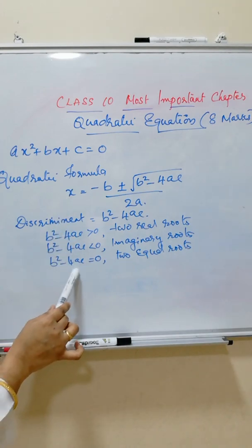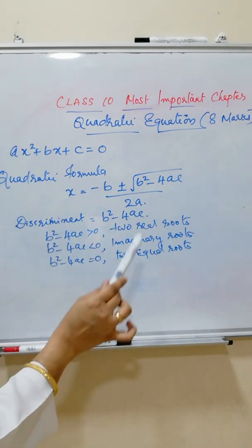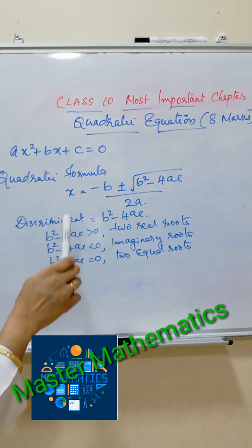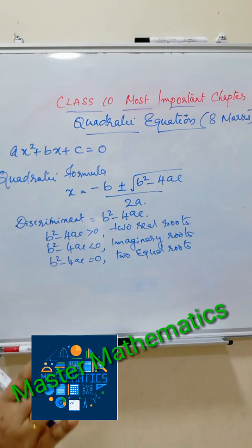b square minus 4ac equal to 0 means 2 equal roots. These are the important formulas about the quadratic equation. It is most important in your board examination. Thank you.